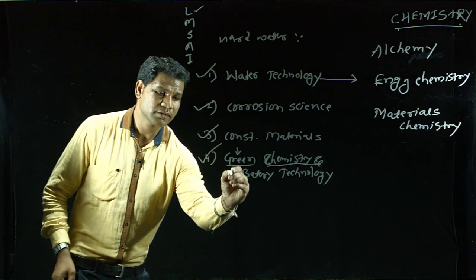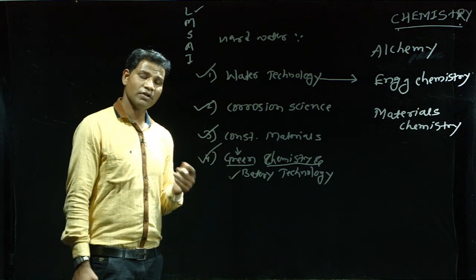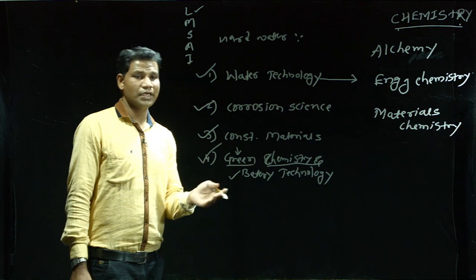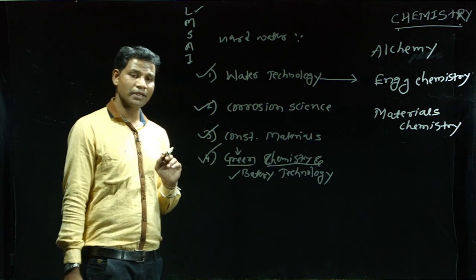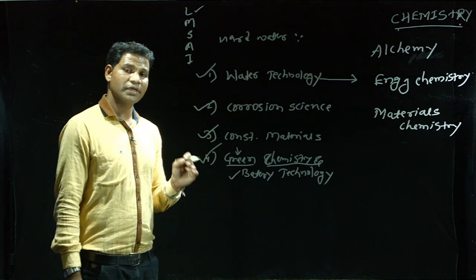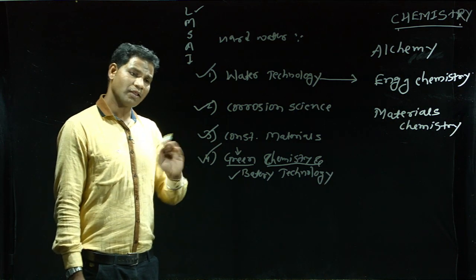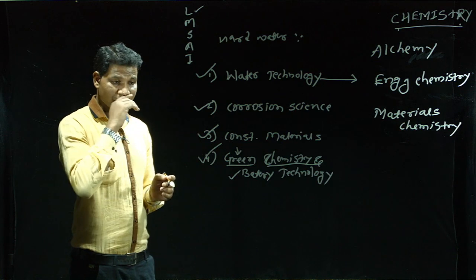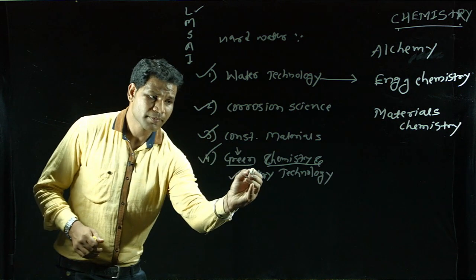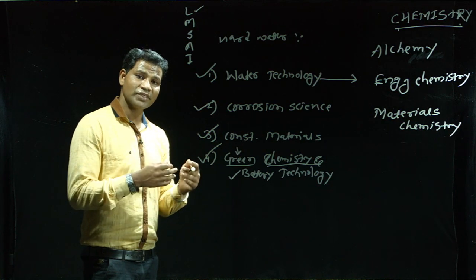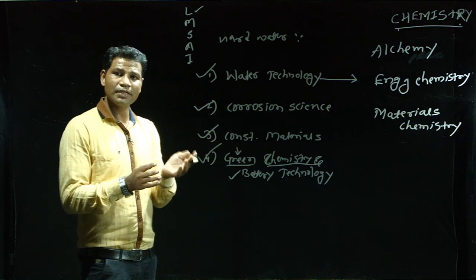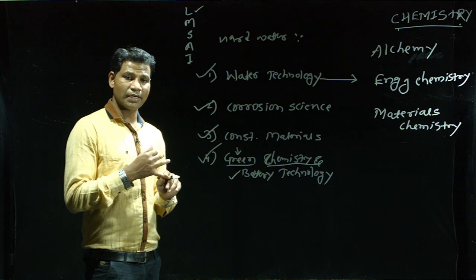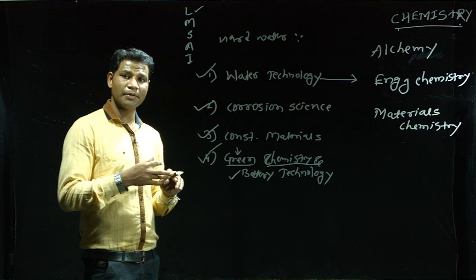Battery technology: batteries are electrochemical devices which convert chemical energy into electrical energy. There are two types: primary batteries, which cannot be recharged — once used, they are discarded; and secondary batteries, which can be reused again and again as reversible reactions take place. Examples of secondary batteries are lead acid battery, lithium ion battery, and nickel cadmium battery.